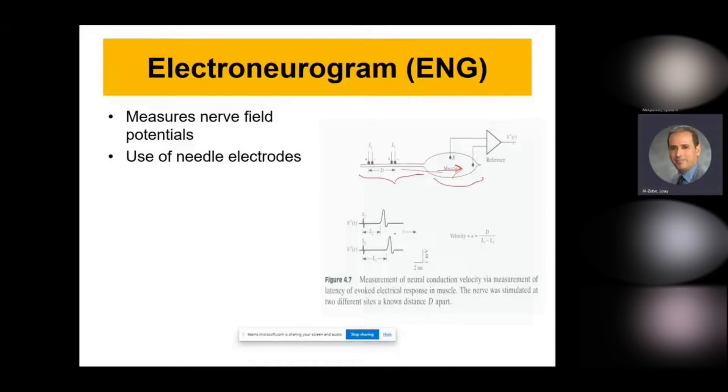If you divide the distance between the two electrodes by the difference between the time the action potential reaches the op-amp, you get the conduction velocity, which is D divided by L1 minus L2. That is called the conduction velocity. And what we do is measure the latency of evoked electrical responses in muscles.